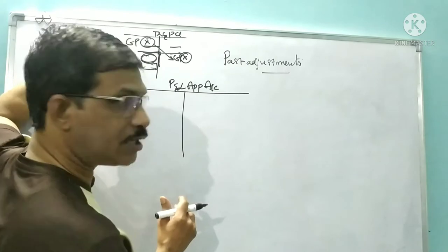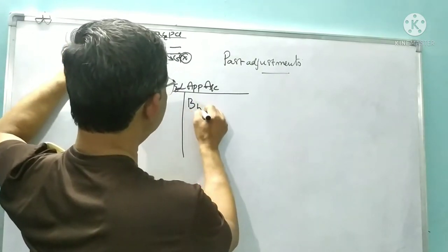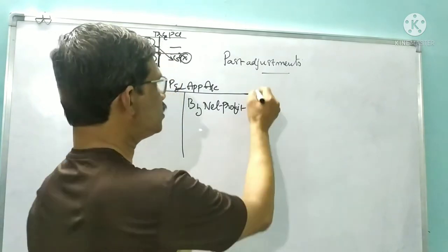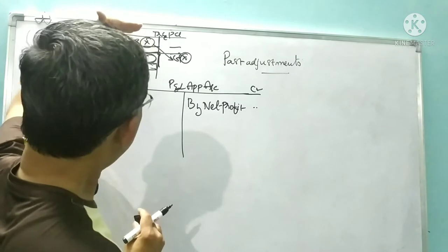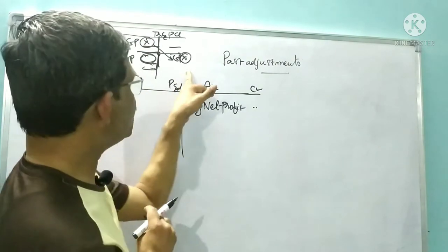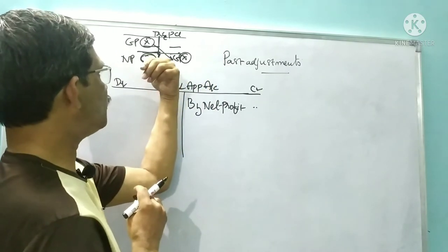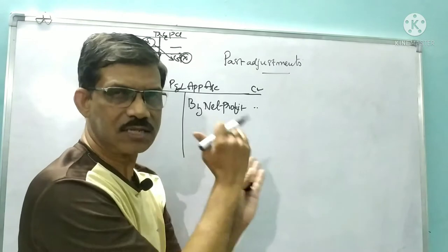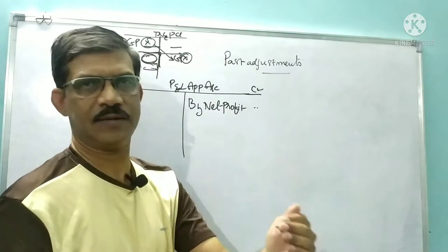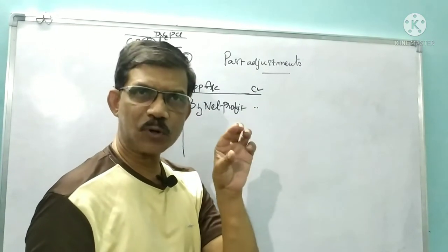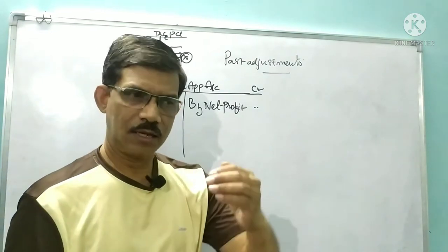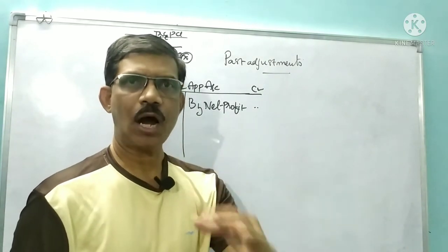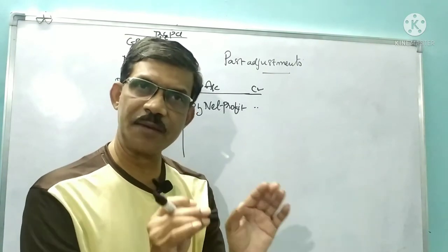Whatever net profit you get in P&L account comes on the credit side of P&L appropriation account. Suppose it is a gross loss, it will go on the debit side. Appropriation means how we are dividing or segregating — how much we are giving for this, how much for that, from our profit. That is called appropriation.